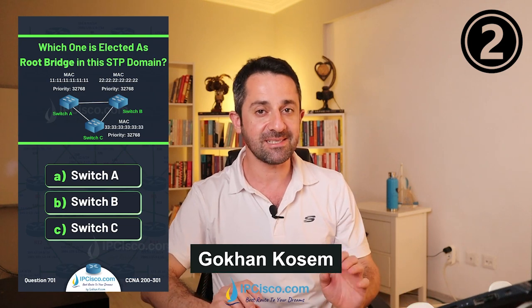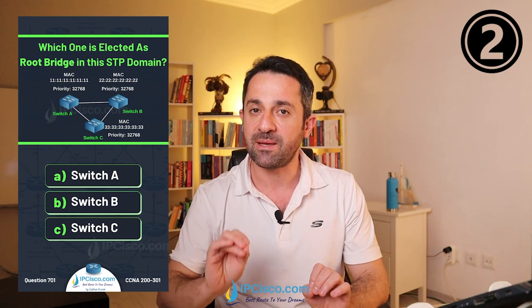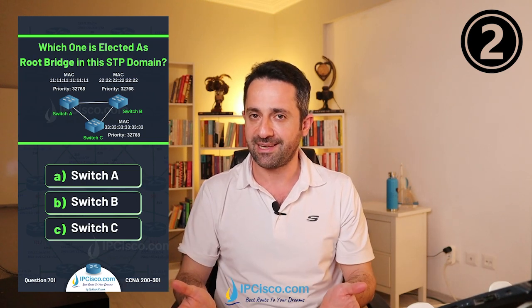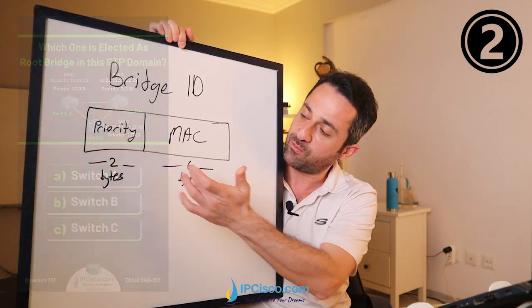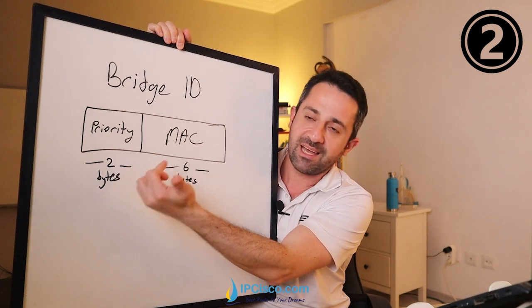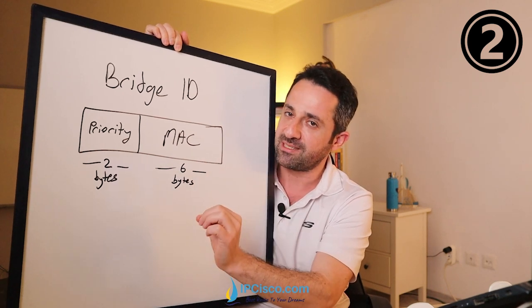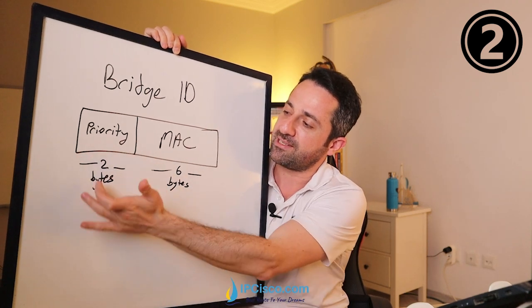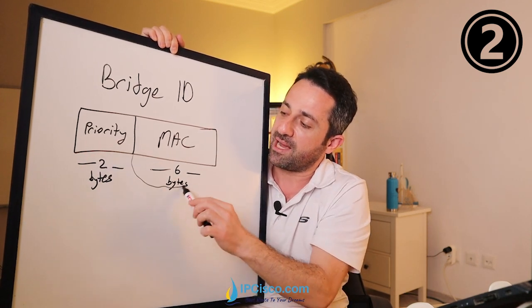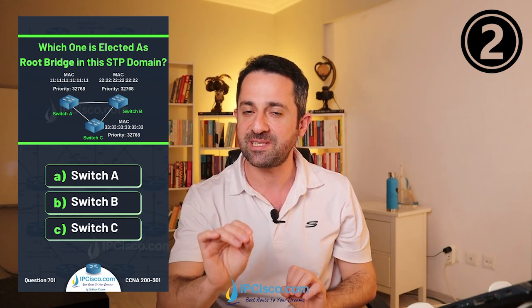Which one is elected as root bridge in this STP domain? There are three switches and one will be root bridge. For root bridge election, we need bridge IDs. A bridge ID consists of two parts: a two-byte priority area and a MAC address area. The switch with the lowest bridge ID is elected as STP root bridge. All switches have the same priority values, so we need to check the MAC address — the switch with the lowest MAC address wins.